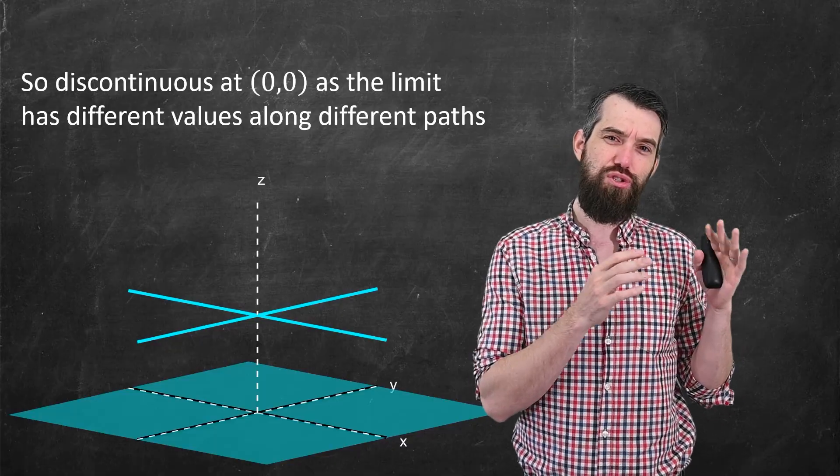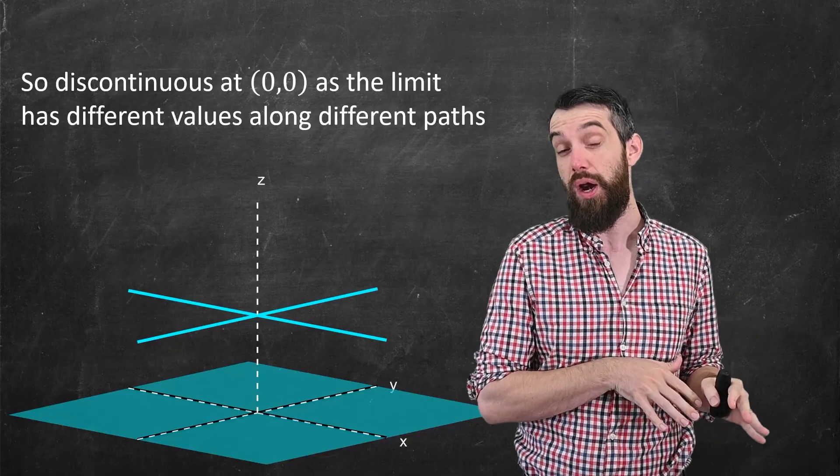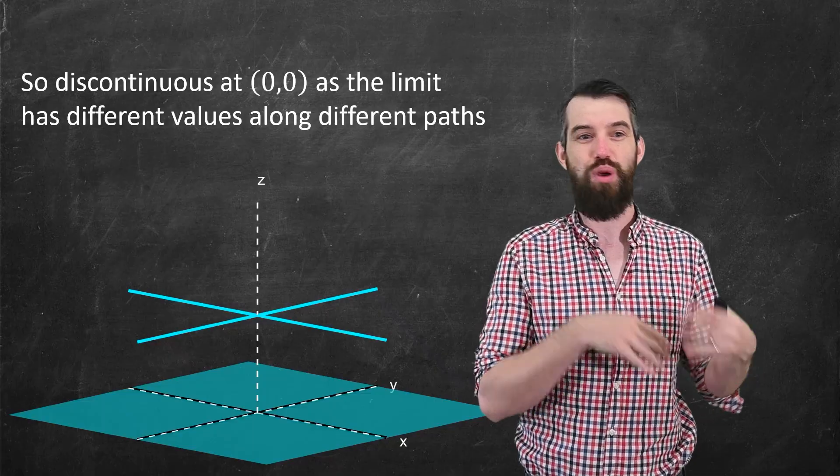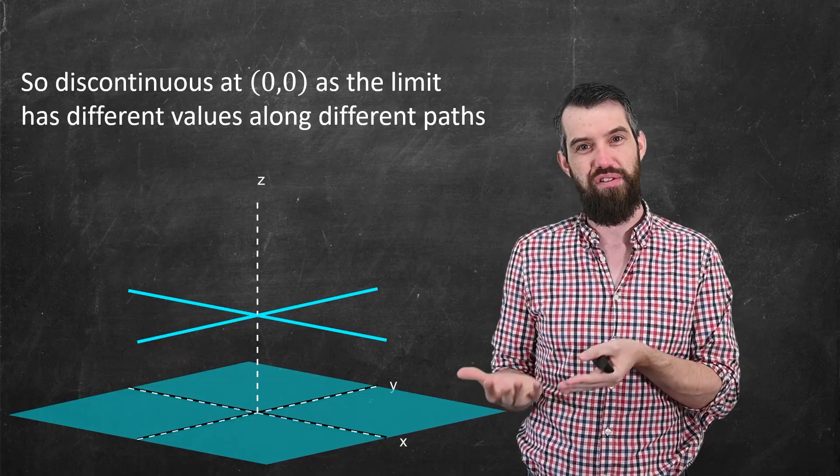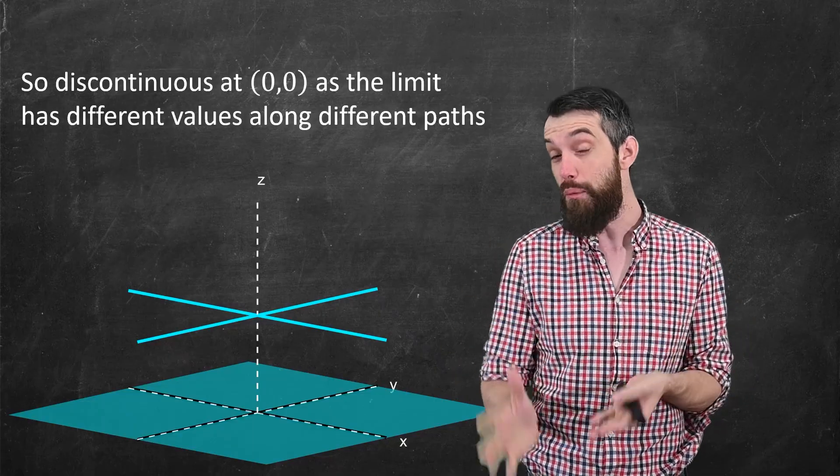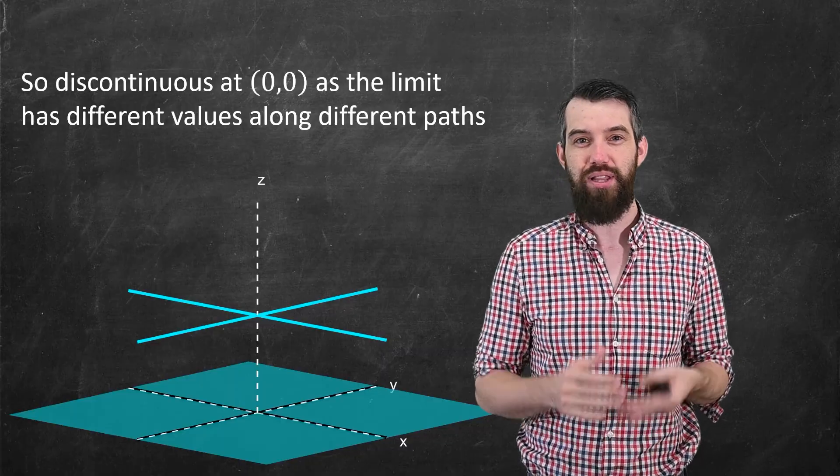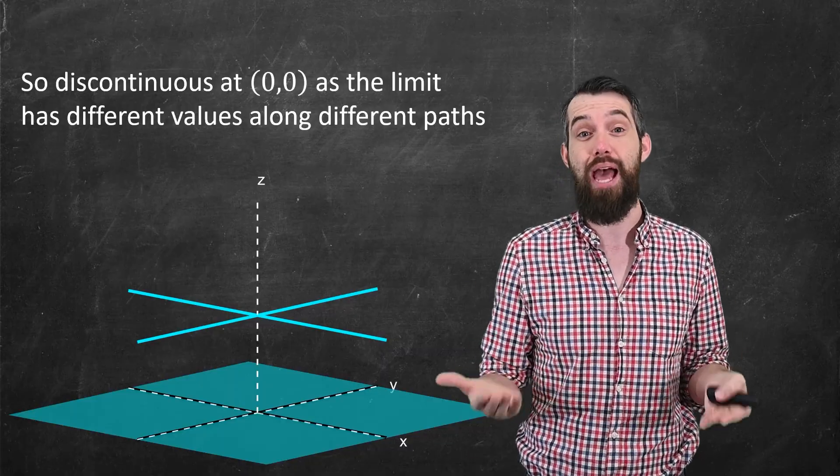Okay, so if what was true in calculus 1 was true here, we would therefore be able to immediately say that the partial derivatives did not exist. That's what we might hope for. Unfortunately, it's not quite so simple. So let's try to study the partial derivatives and see what happens to them.